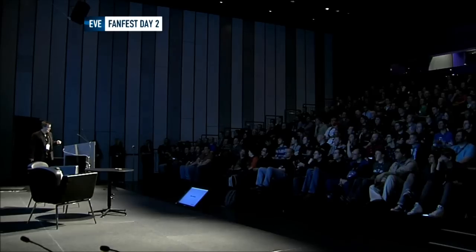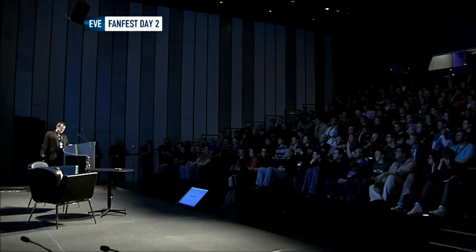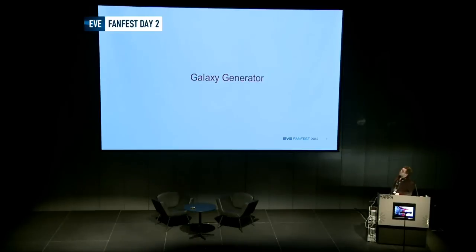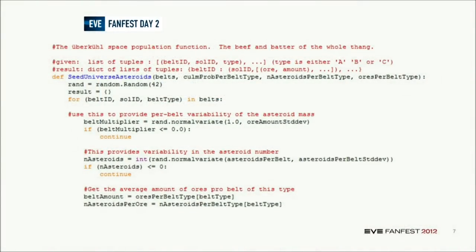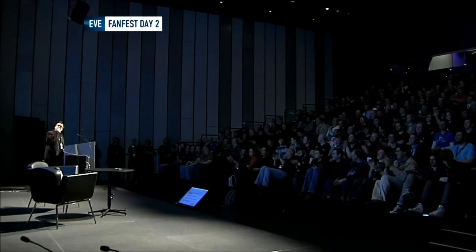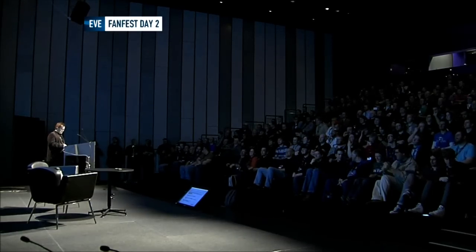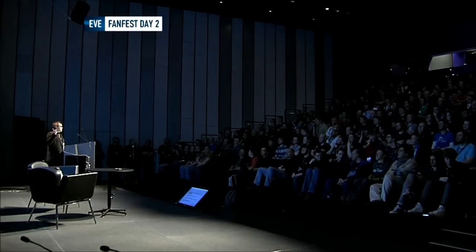I thought it was also a good time to admit some sins. I was digging into a very old file backup I had and found this file — this was for the seeding of the asteroid belt. All the random generation was seeded with 42 — the answer to life, the universe, and everything. It's all in the fabric of EVE. That wasn't really a sin, but the next one is.